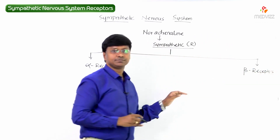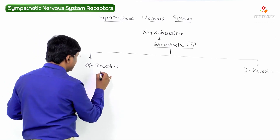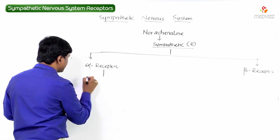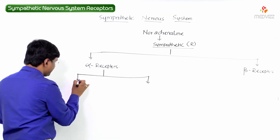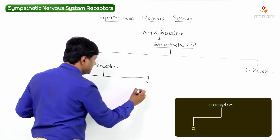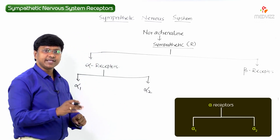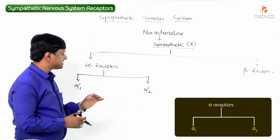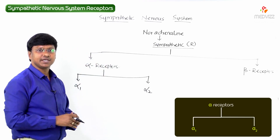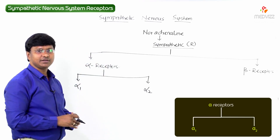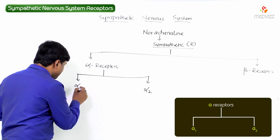The alpha receptors are of two types: alpha 1 receptors and alpha 2 receptors. Within both alpha 1 and alpha 2, there are further subtypes.